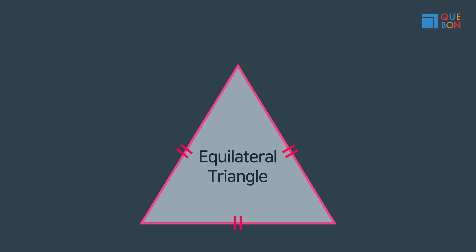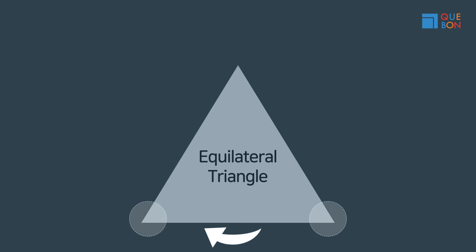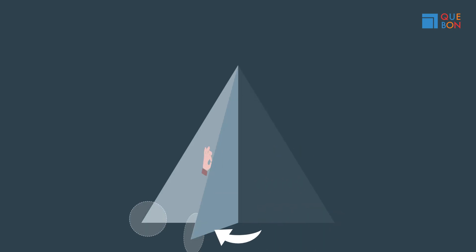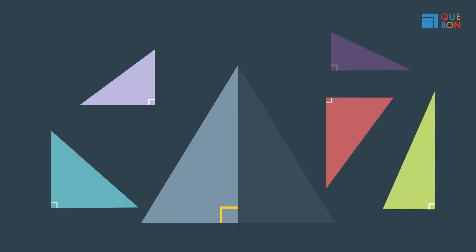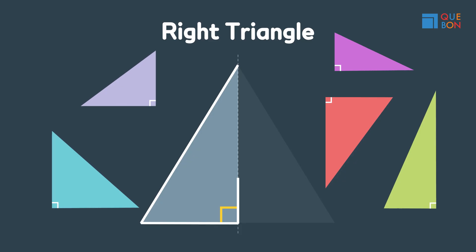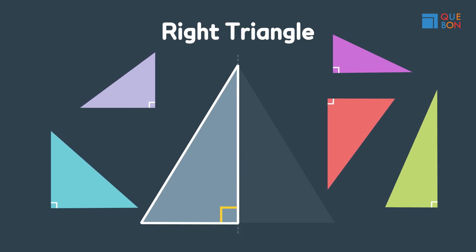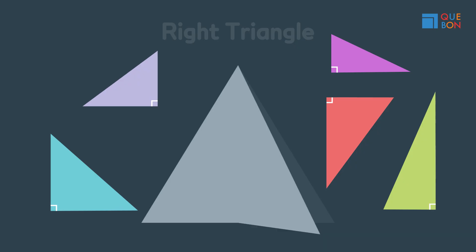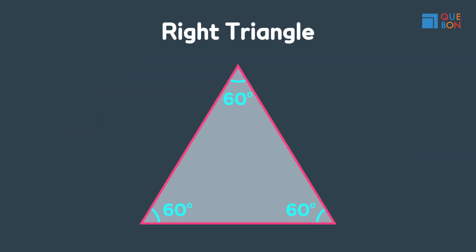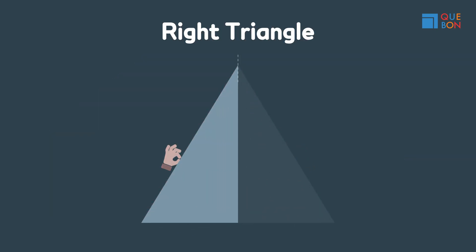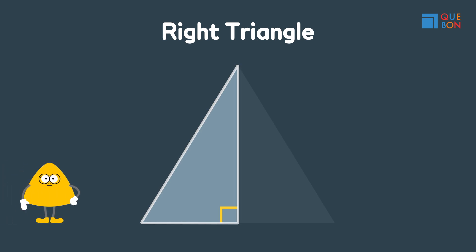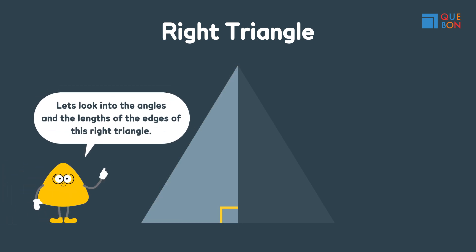Here we have an equilateral triangle. If we fold it in half, this angle becomes a right angle — a triangle with one right angle is called a right triangle. The most famous right triangle is the one created by folding the equilateral triangle. Today we'll learn about this right triangle and look into the angles and the lengths of the edges.